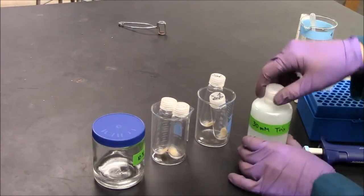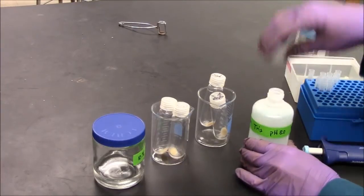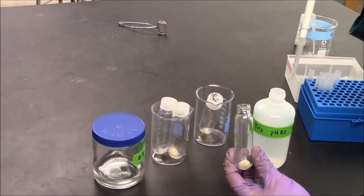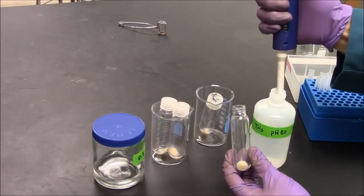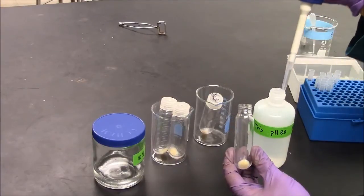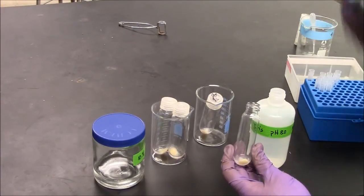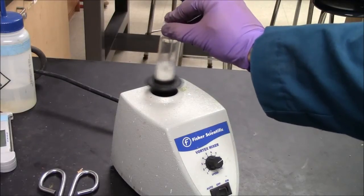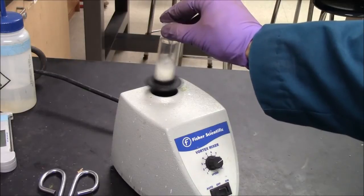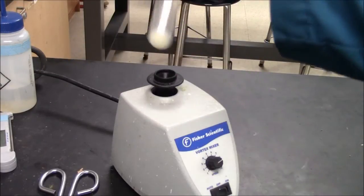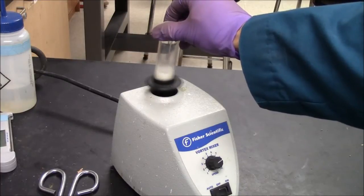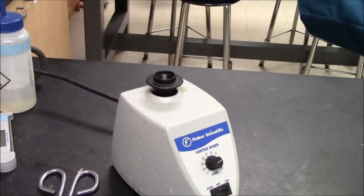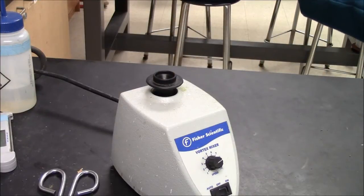Now I'm resuspending the cells in 30 millimolar Tris buffer pH 8.0. So the purpose of this buffer is to wash away traces of the Luria broth. So here's my milliliter. I can vortex this. I vortex it at a pretty high speed. And I observe there's still some pellet. That looks pretty good.